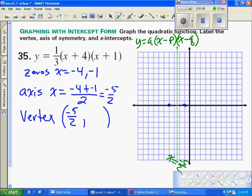and we're going to plug that into my equation. That will be y equals negative 1 third. That's not true, it's not a negative. We'll stay with positive 1 third. And then it's going to be negative 5 halves plus 4, which is going to be 8 halves, times negative 5 halves plus 1, which is 2 halves.